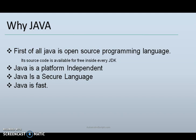In May 2007, Sun finished the process of making all of Java's core code available under free software or open source distribution terms, aside from a small portion of code to which Sun did not hold the copyright. Open source basically refers to a program in which the source code is available to the public free of cost, for use, or for modification from its original design.